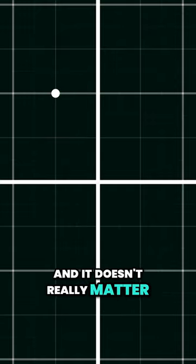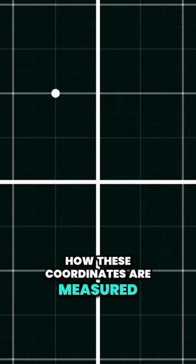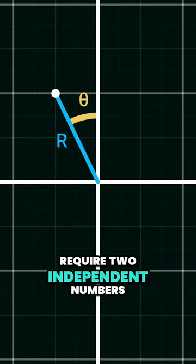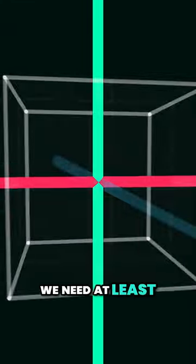And it doesn't really matter how these coordinates are measured. Both Cartesian and polar systems, for example, require two independent numbers. And we live in a 3D world because we need at least three coordinates.